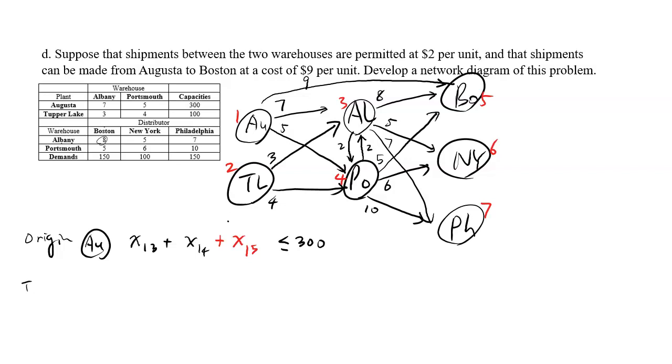For the transshipment node, only the origin nodes are inequalities and transshipment and destination nodes are equalities. For transshipment, it's basically the total in should equal to total out. We're going to look at Albany first. There's x_1,3 coming in and x_2,3 is coming in. However, there's one more - there is something coming in from 4. That's the newly added route. So x_4,3 is the new thing that's added.